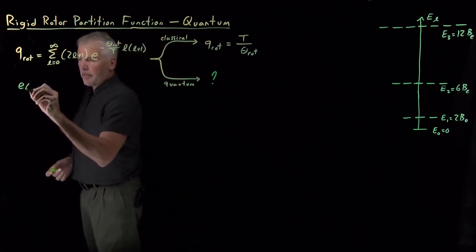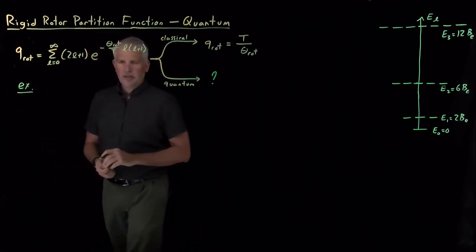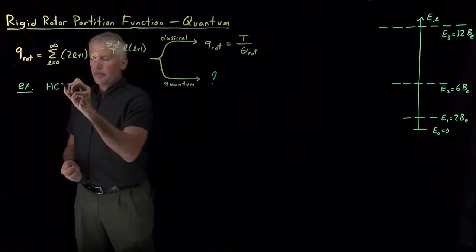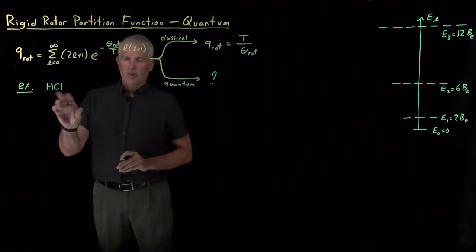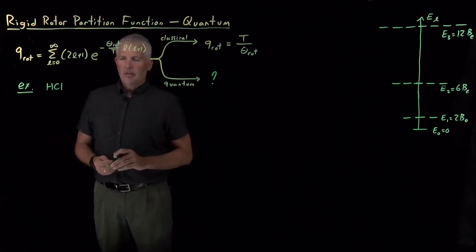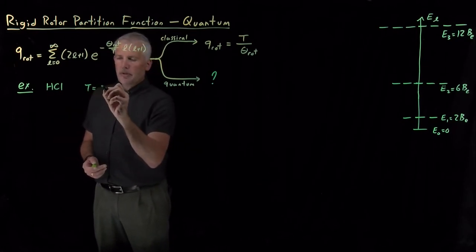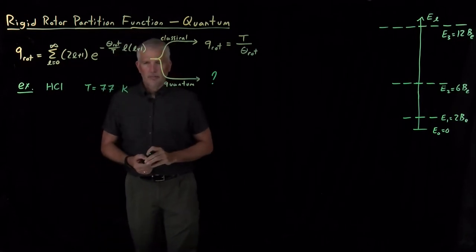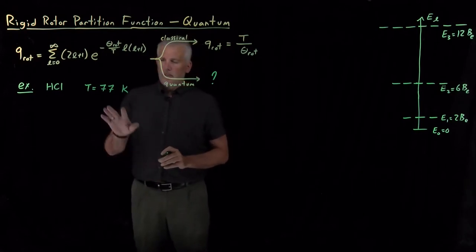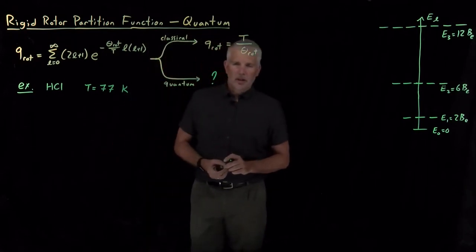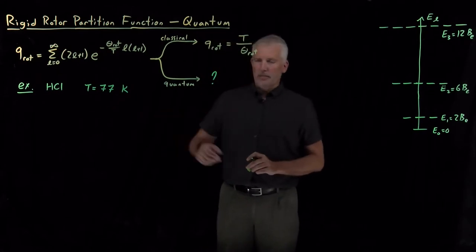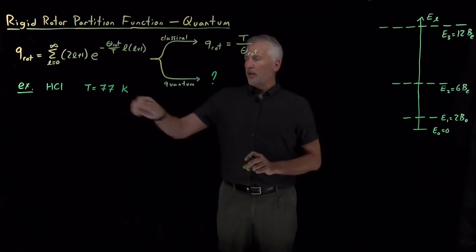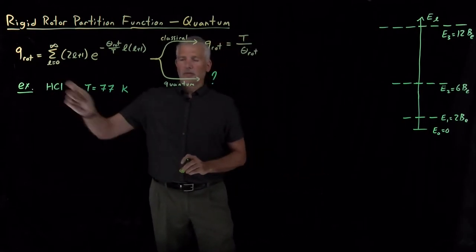So to show you what I mean by that, let's work an example. Now instead of doing carbon monoxide, let's take a molecule that's a little bit more quantum mechanical, HCl. We'll see in a moment why that's a more quantum mechanical molecule. And let's do it at a temperature that's quite a bit lower so quantum effects become more important. 77 Kelvin is liquid nitrogen temperature. So if we take some HCl molecules and cool them down with liquid nitrogen, then we can ask ourselves what the partition function might be.